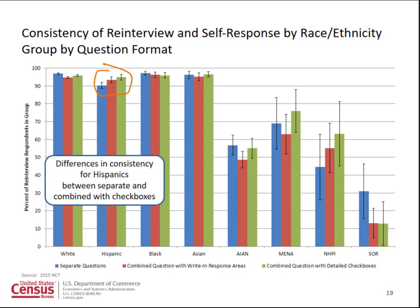Finally, I want to show you the results of the re-interview. We examined the level of consistent reporting — for those in a given group based on the re-interview, how many identified in the same way in the initial self-response phase? Largely, the results were similar across the different question formats. We want people to say they were white at point A and white at point B if they are in fact white. What we see is significantly lower levels of consistency for Hispanic respondents between the separate questions compared to the combined questions. Some of the bars are lower for smaller groups — American Indian, Alaska Native, the MENA category, and Native Hawaiian and Pacific Islanders — partly because these are very small groups and tend to be very multiracial.